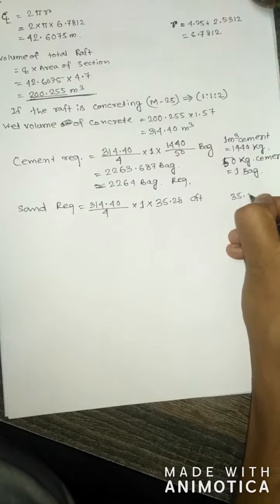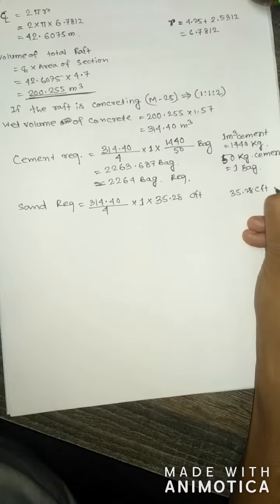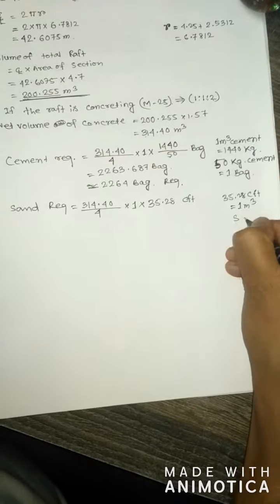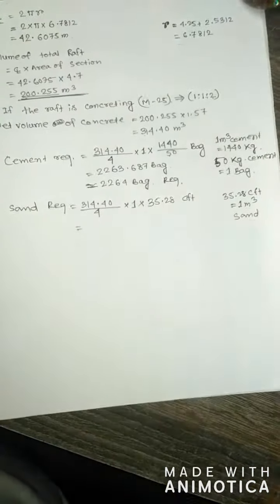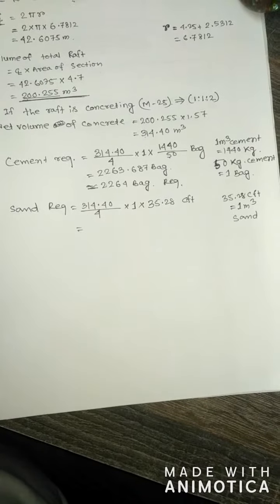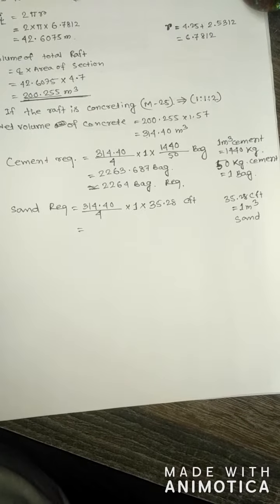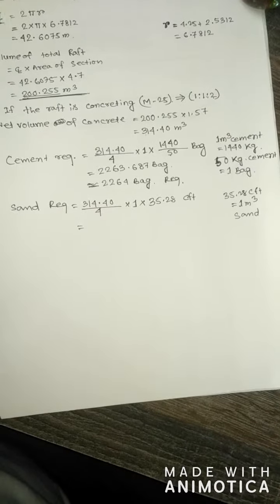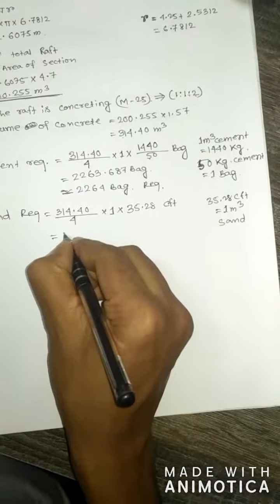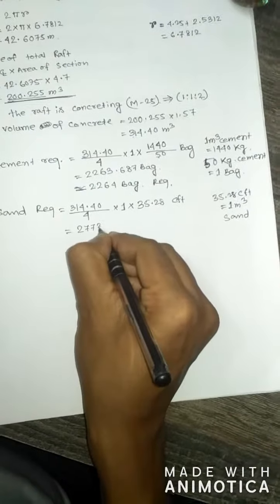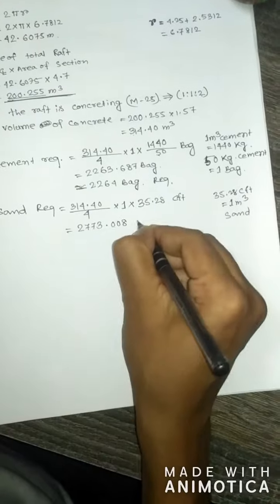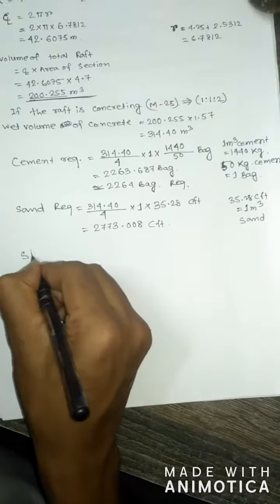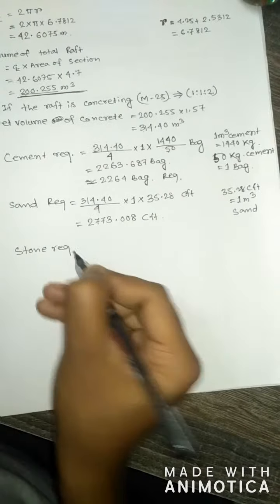Sand required equals volume 314.40 divided by total proportion 4, into quantity of sand 1, into 35.28 CFT per m³. Sand required equals 2773.008 CFT, since 35.28 CFT equals 1 m³ of sand.